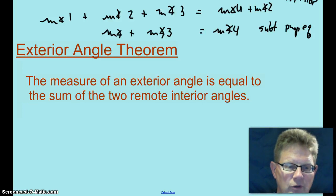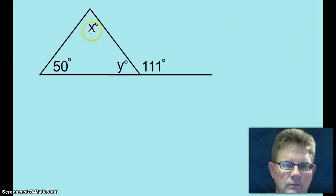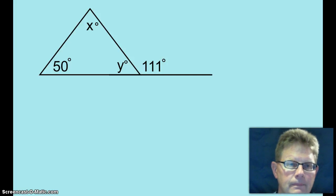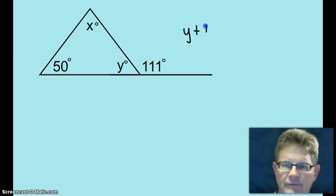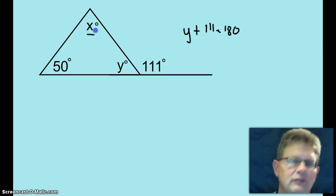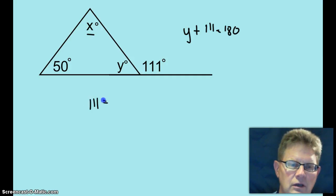Let's mess around with some numbers. Using the linear pair postulate you should be able to figure out what y is: y plus 111 equals 180. But you should also be able to find x using the exterior angle theorem — the exterior angle equals the sum of the two remote interiors — and you should be able to figure out x fairly easily as well.